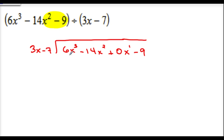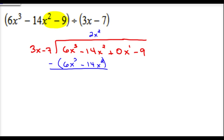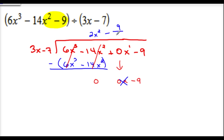3x goes into 6x cubed how many times? 3x times what is 6x cubed? 2x squared. So 3x times 2x squared is 6x cubed. Negative 7 times 2x squared becomes negative 14x squared. Subtract — this goes away, this goes to zero, and you're left with 0x minus 9. Can 3x go into 0x? No. Can 3x go into negative 9? No. So you can't go any further. This is 2x squared minus 9 over 3x minus 7 — that's your final answer.